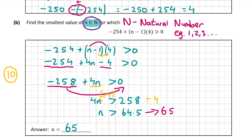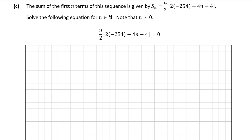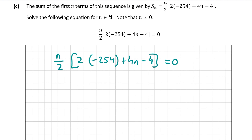Now let's have a look at part c, the final part of this question. We're asked to solve the following equation for n, which is again a natural number. This is the sum of the first n terms of a sequence. If you're ever asked to find the sum of the first n terms, the formula is on page 22 of your formula and tables book. We're going to solve for n, meaning find a value for n — we should end up with n equal to some number. It also says n cannot be 0, so it's possible we may end up with two answers, one being 0, but the answer is just whatever number isn't 0.